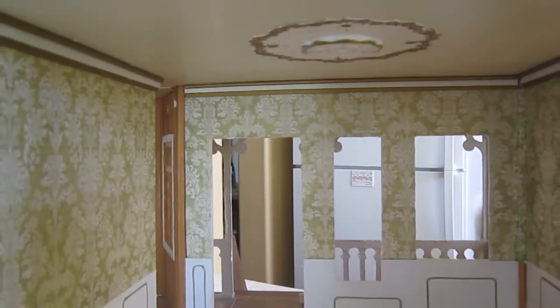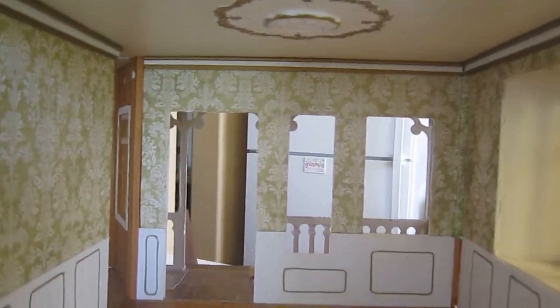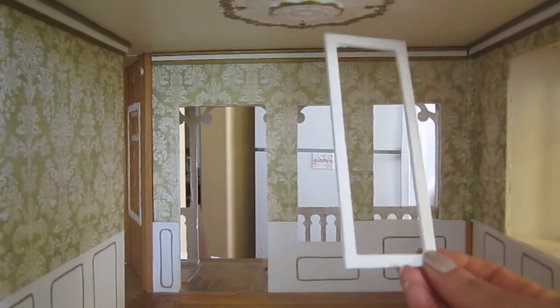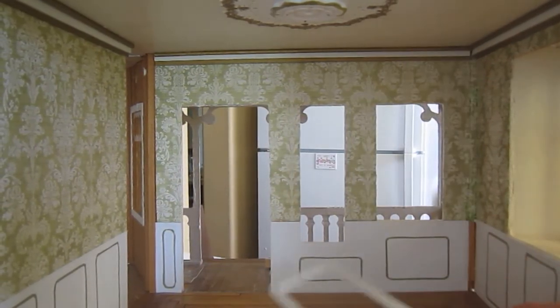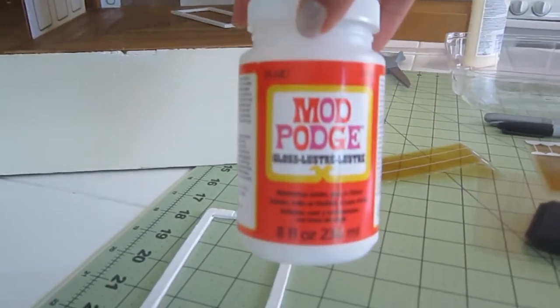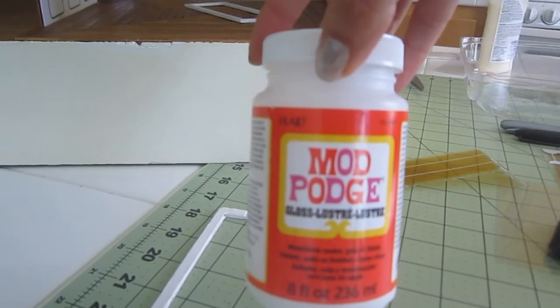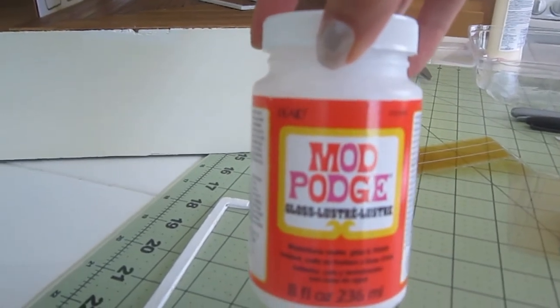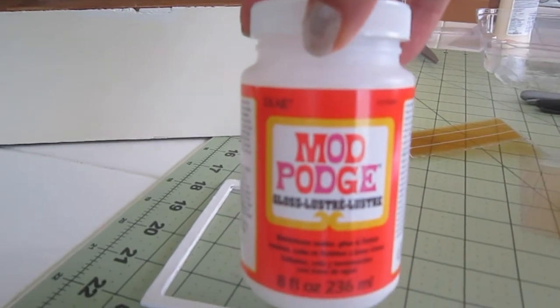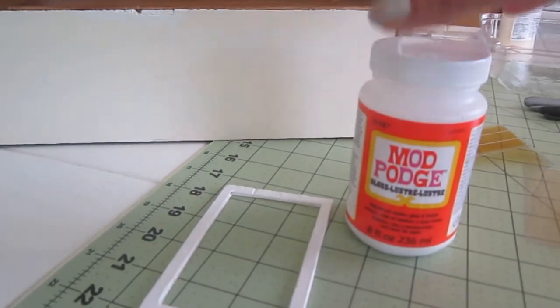Today we are going to be applying the window frames that came off as well as the window panes. Before I do that I am quickly going to add a coat of Mod Podge on the wallpaper to protect it because I want to be able to let my granddaughter play with it and be able to wipe it without having any concern.